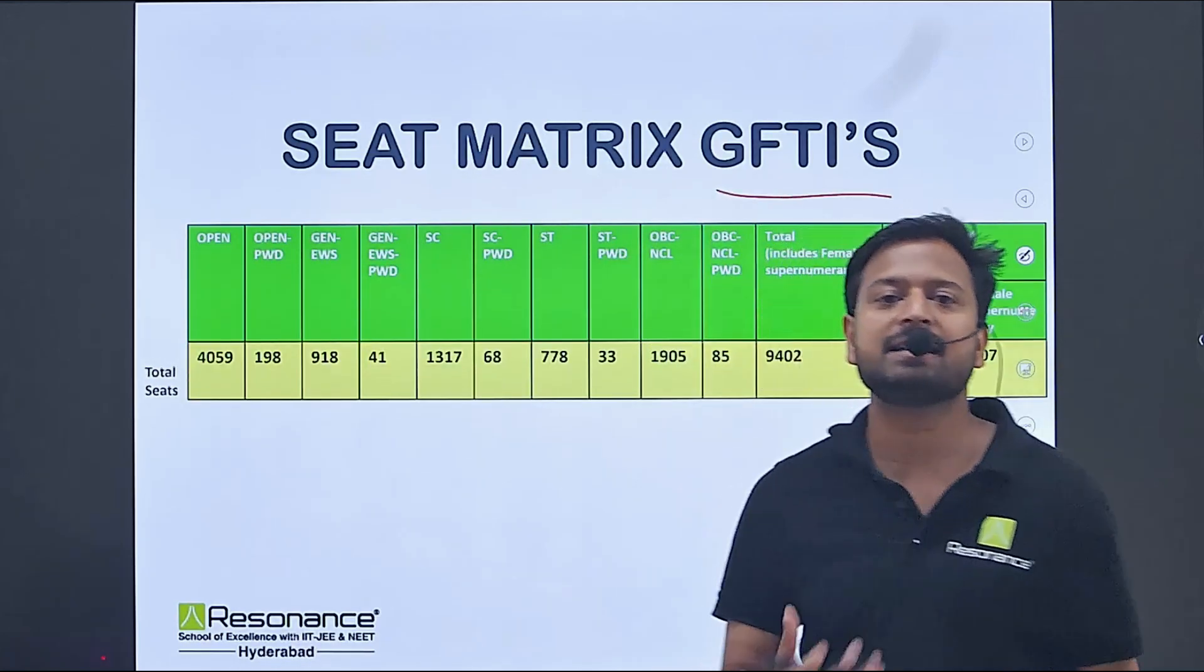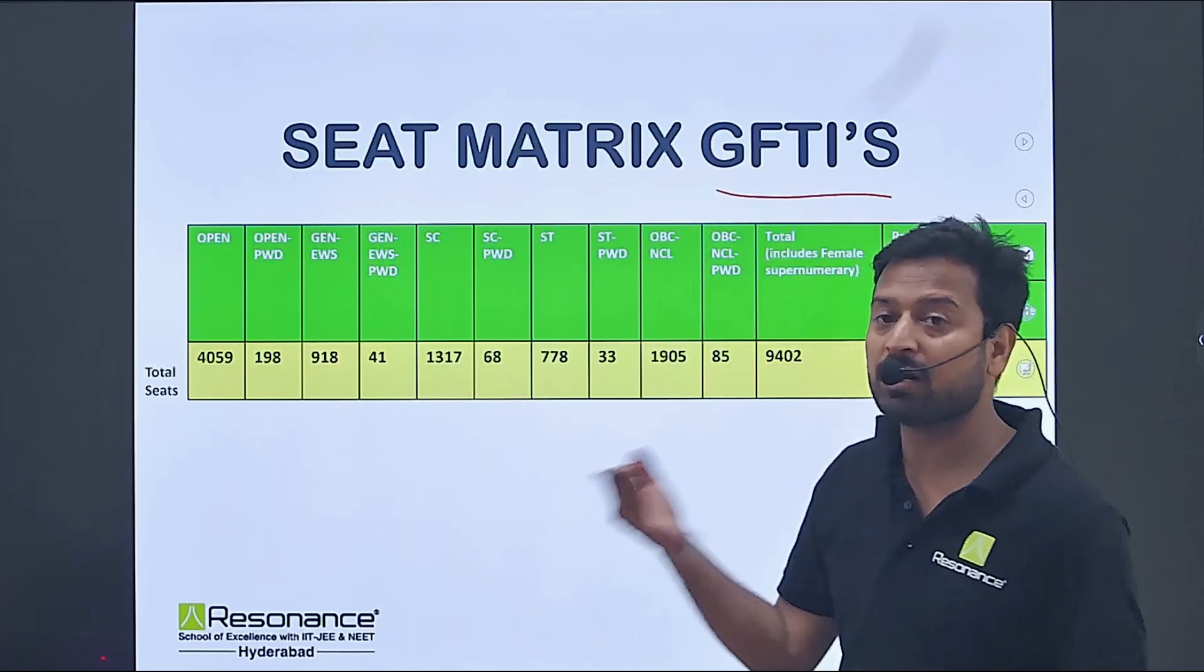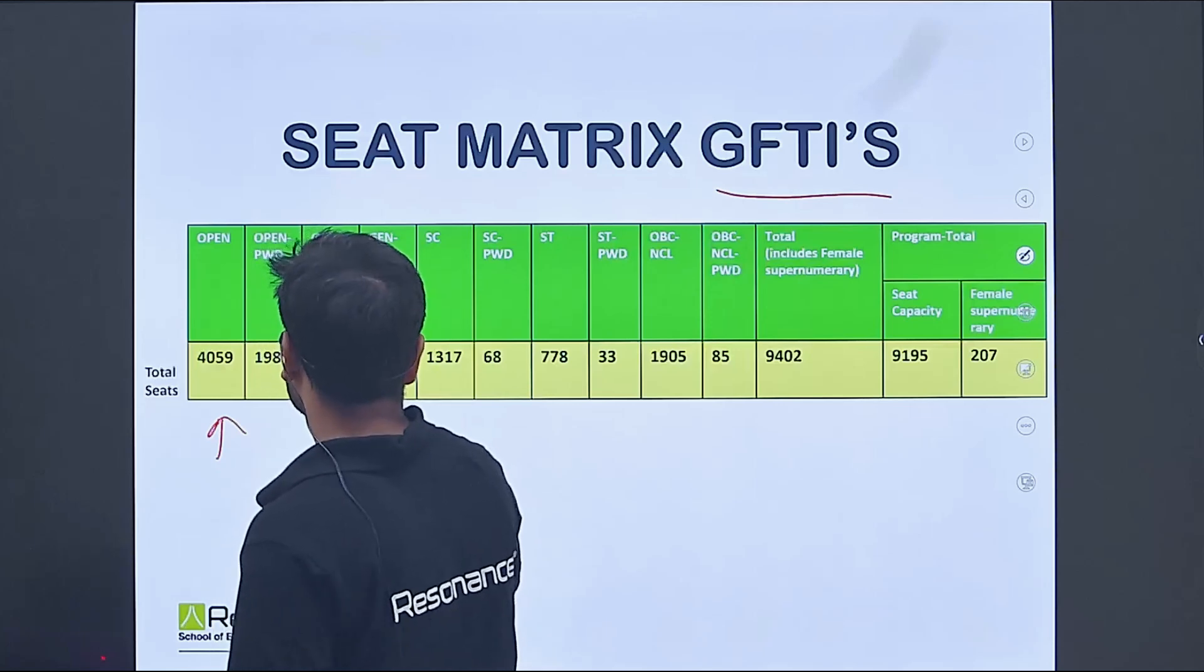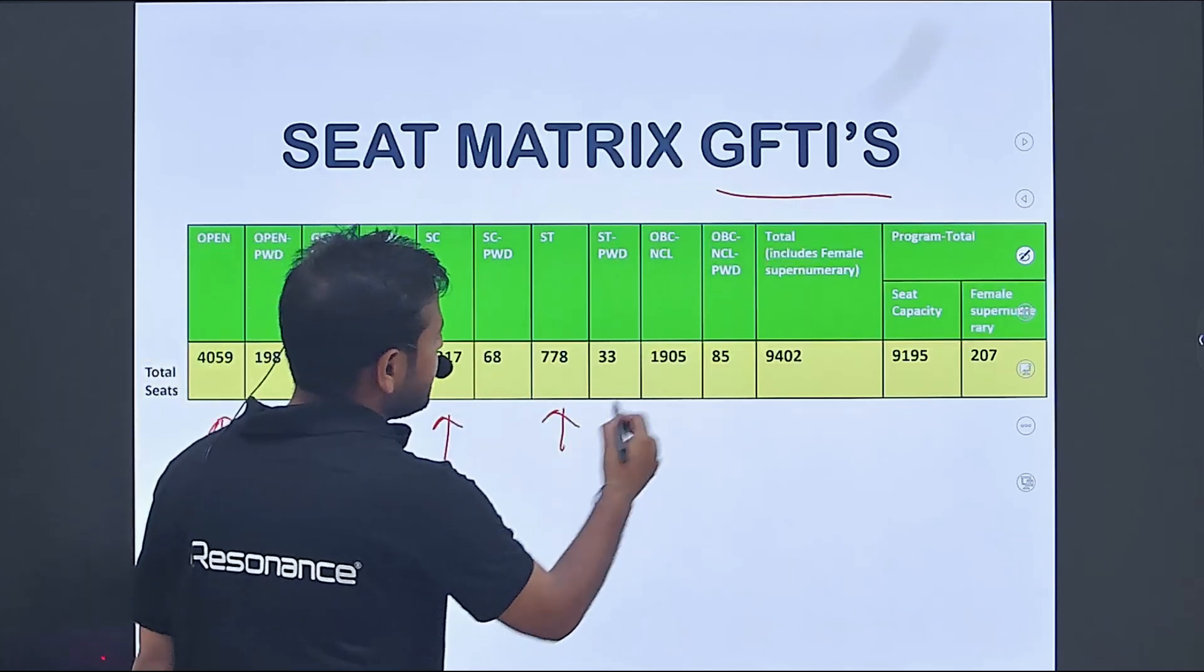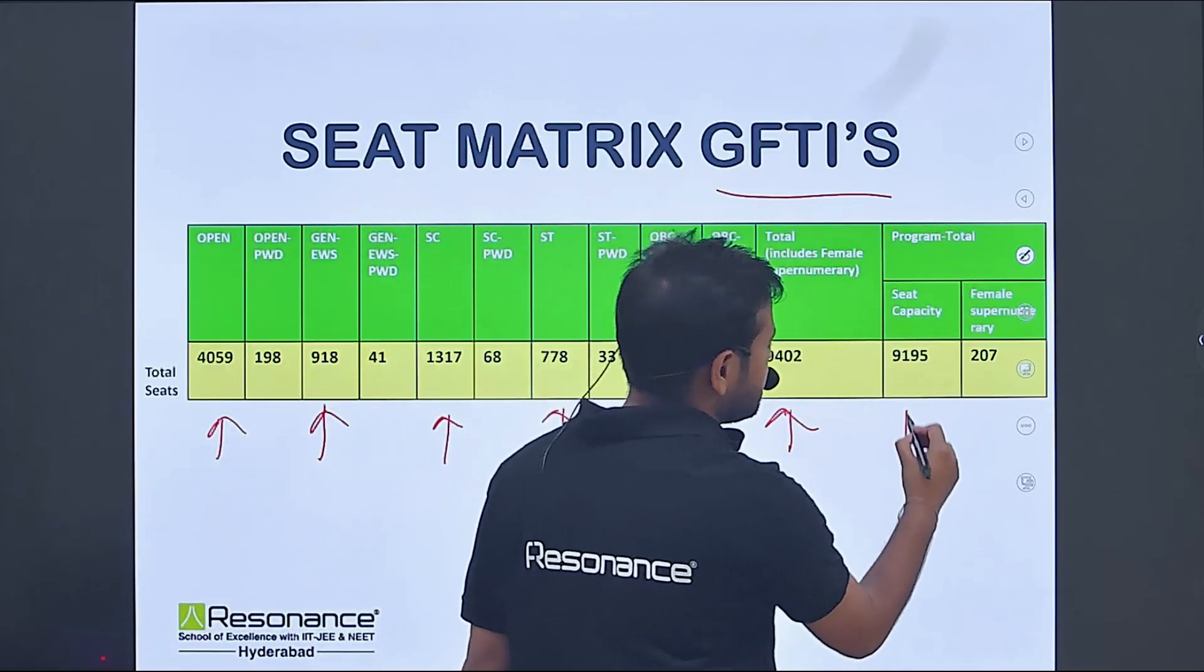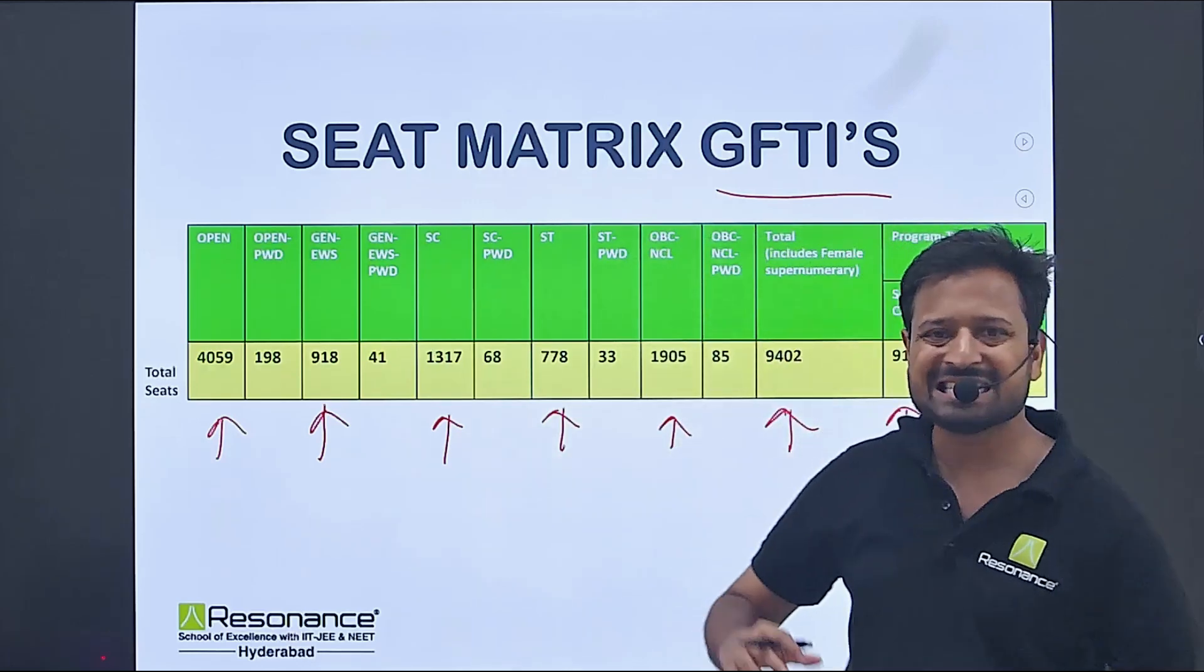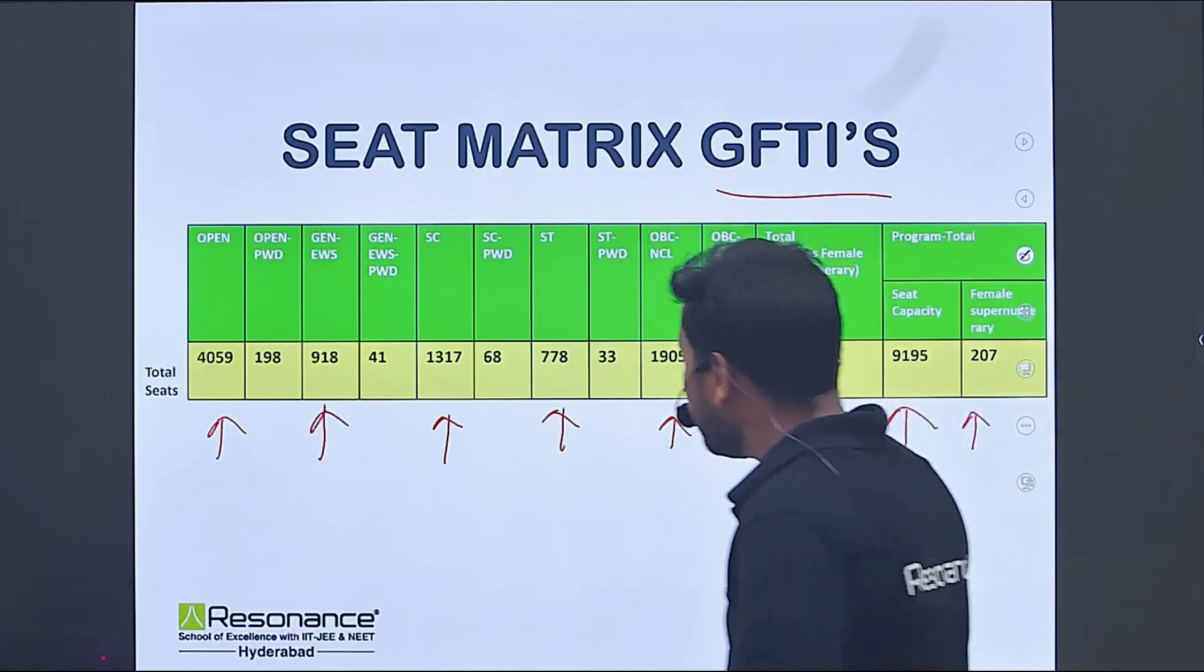For GFTI - government funded training institutes - open 4059, general EWS 918, SC 1317, ST 778, OBC NCL 1905, total 9402, program total seat capacity 9195, and female supernumerary 207.